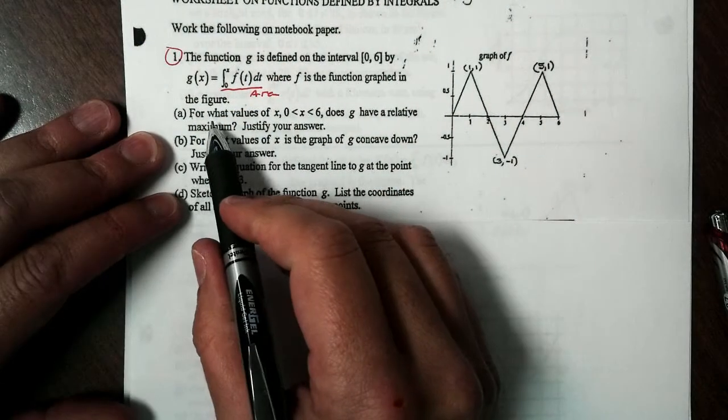When we do our sign chart, 0 to 6, there is g prime, and there is, of course, g. We got 2 and 4 for our critical numbers in the middle. And we're looking at these, remember, we're looking at f of x, so we're going to look at the values of f. And between 0 and 2, the values are positive, so that's telling us g is increasing. Between 2 and 4, the values of f are negative, so that tells us g is decreasing. And between 4 and 6, again, positive, so g is increasing.